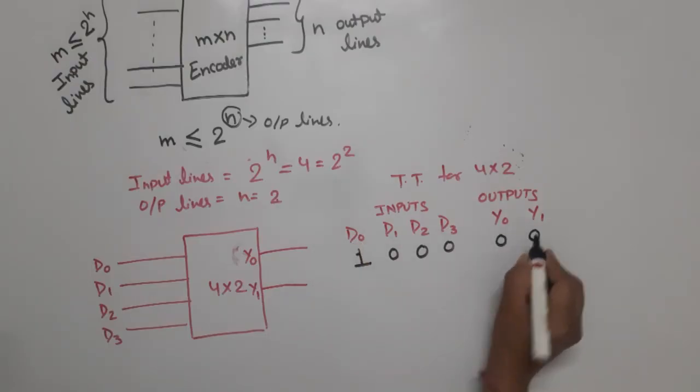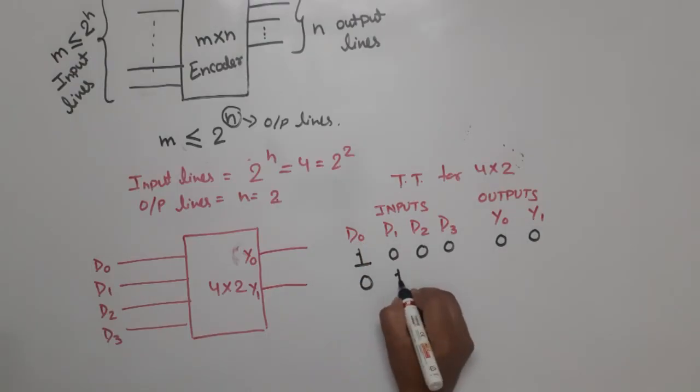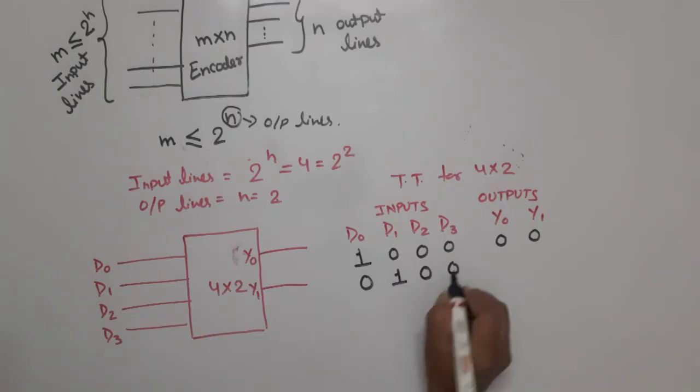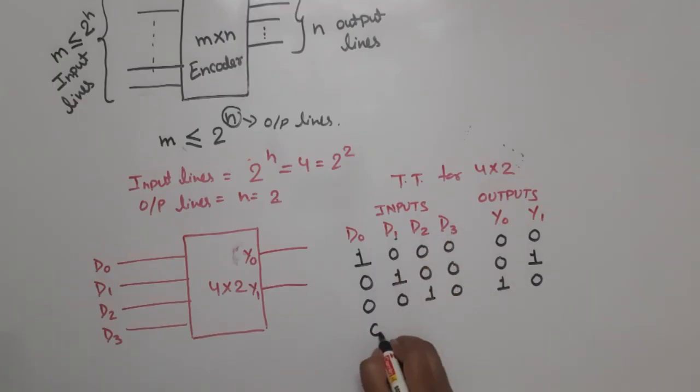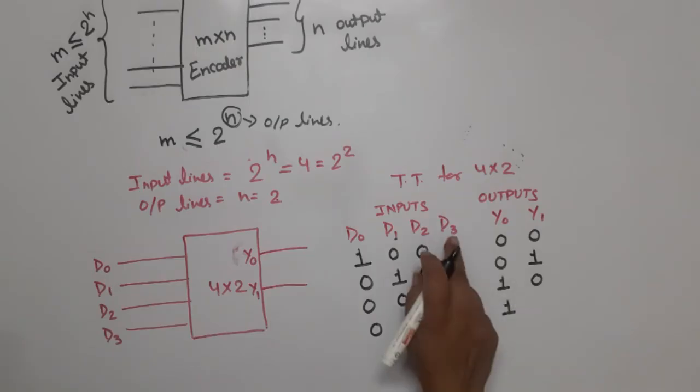Now D1 high, remaining all 0, decimal value 1, so binary is 01. D2 high, remaining all 0, binary is 10. D3 high, remaining all 0, binary is 11.